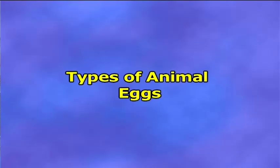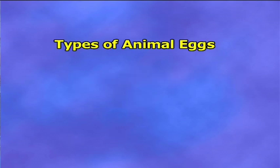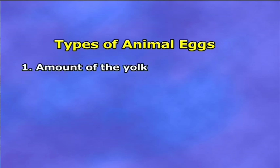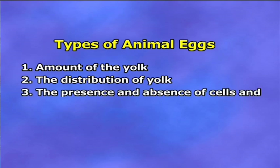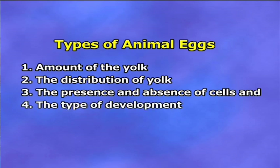Starting with various types of animal eggs, the animal eggs are classified according to four criteria: number one, amount of the yolk; number two, the distribution of yolk; number three, the presence and absence of cells; and number four, the type of development.